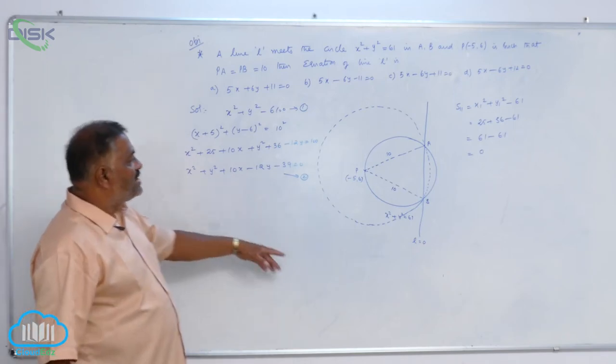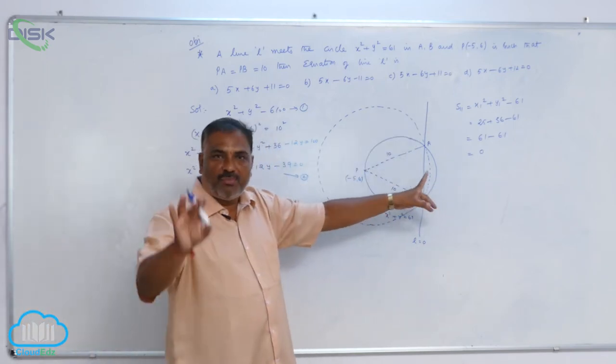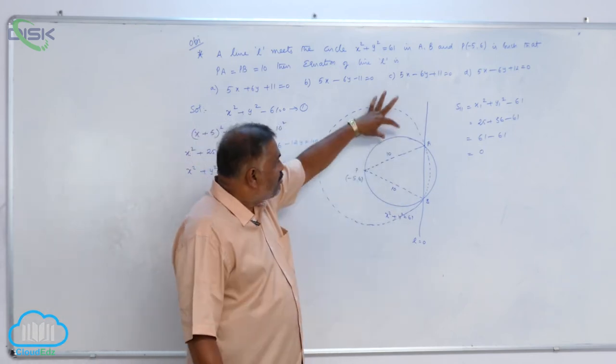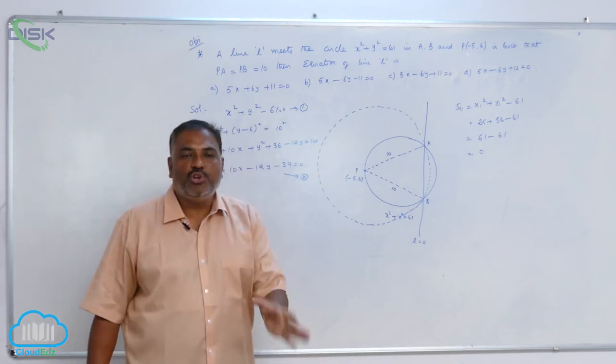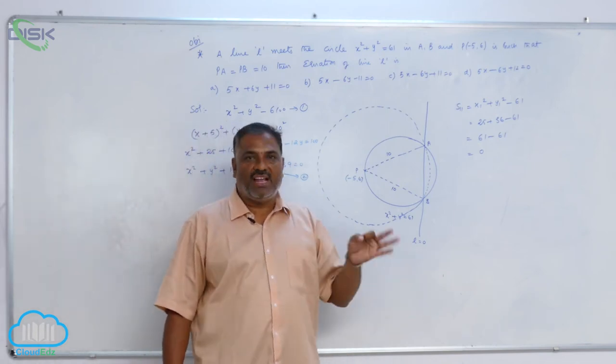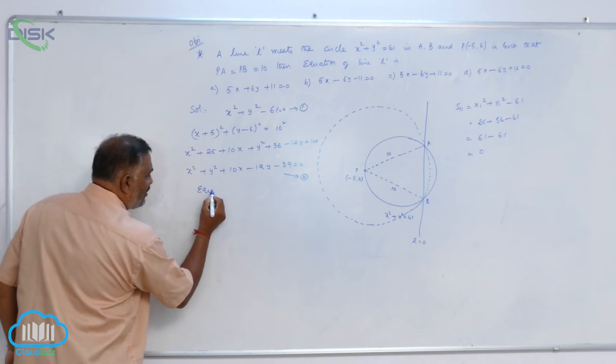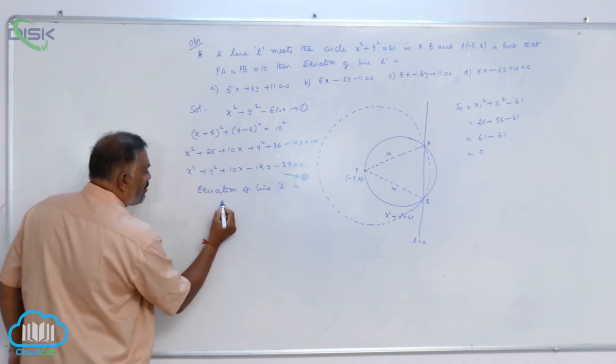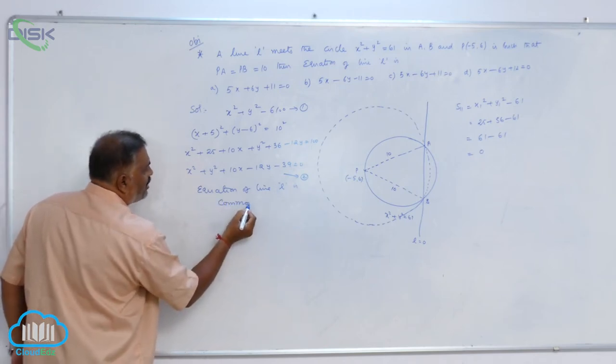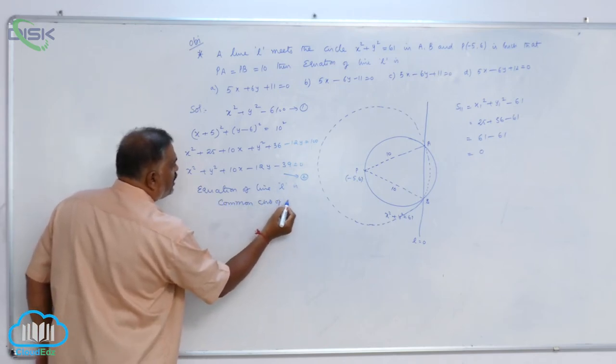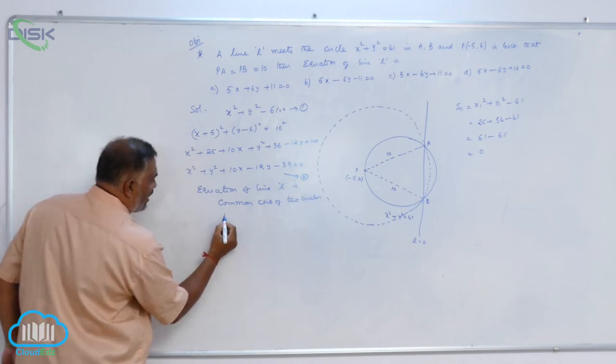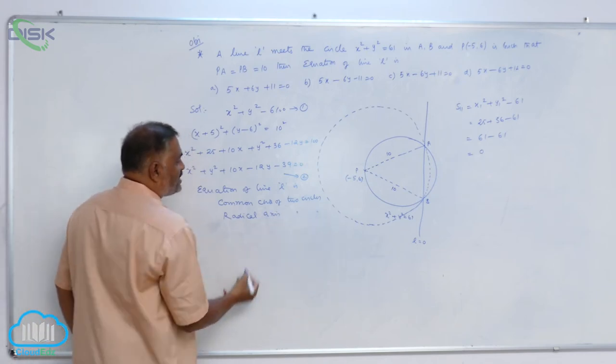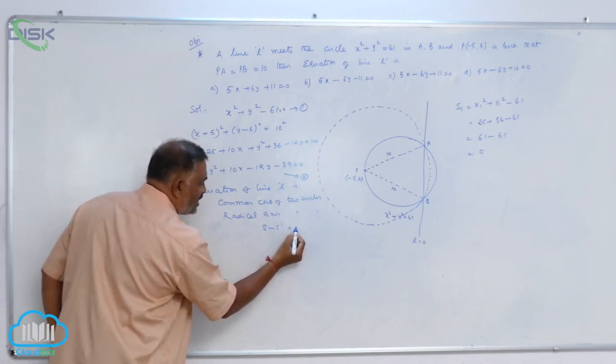The question is, what is the equation of line? From the figure, it is very clear that AB is nothing but common chord of both circles. As we know that common chord is nothing but radical axis. So equation of line L is common chord of two circles, which is radical axis. Radical axis of two circles. Then, the point is, S minus S dash equal to 0.